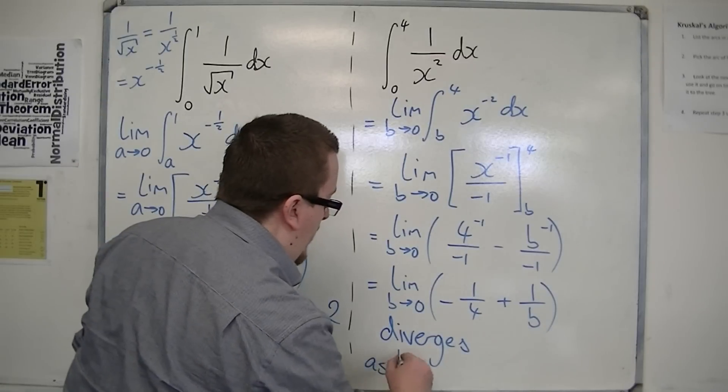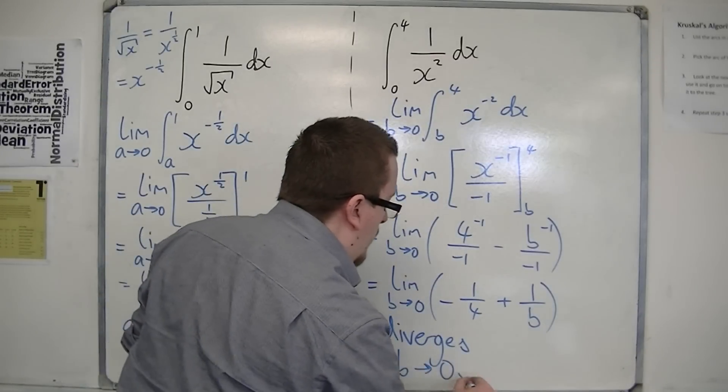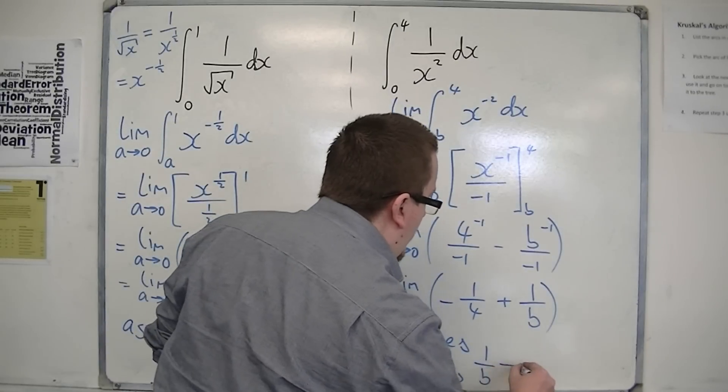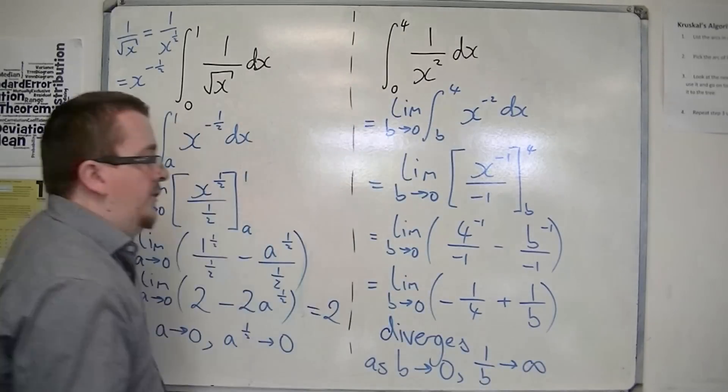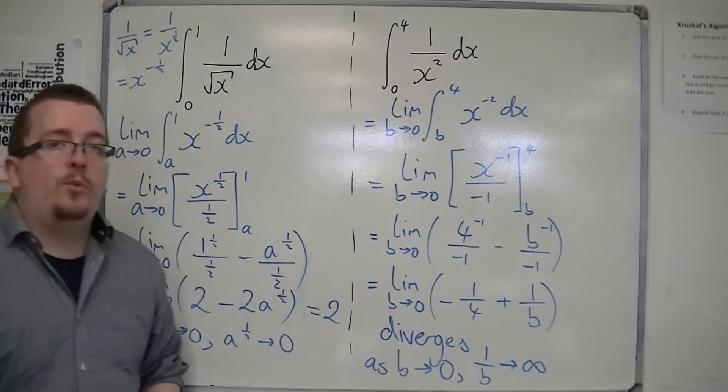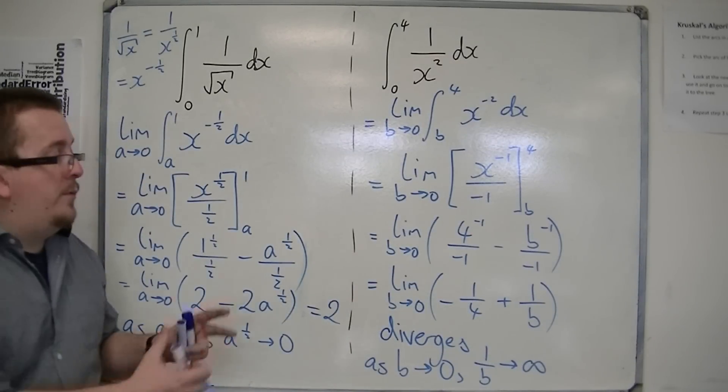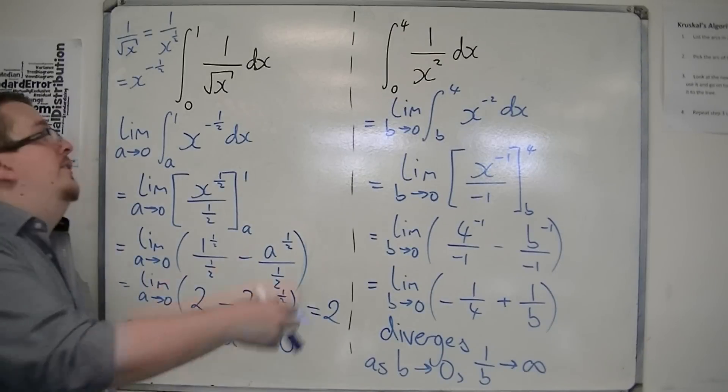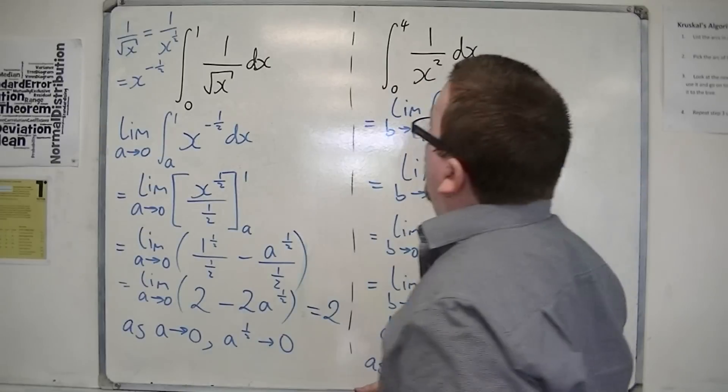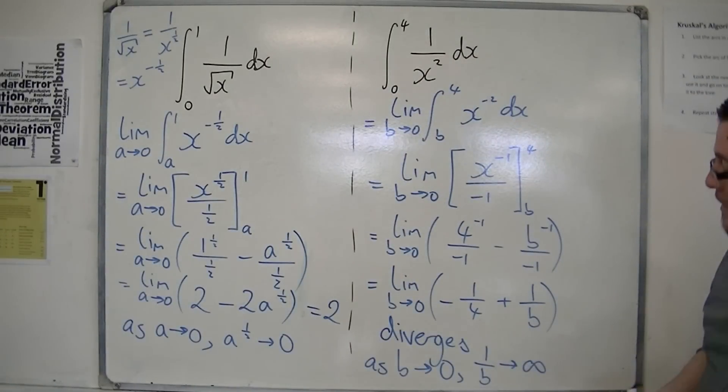So as b tends to 0, 1 over b tends to infinity. So because one of the elements is tending to infinity, that must mean the whole thing tends to infinity, and so the integral diverges. So this has no value to it. Or it's just too large to comprehend.